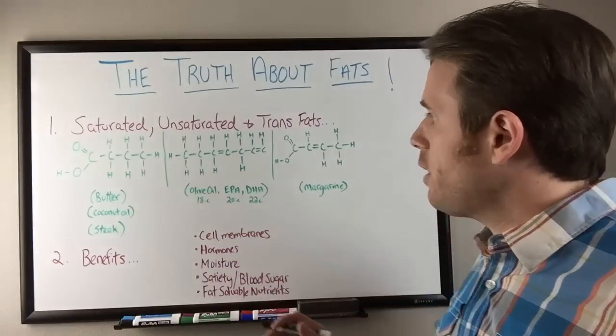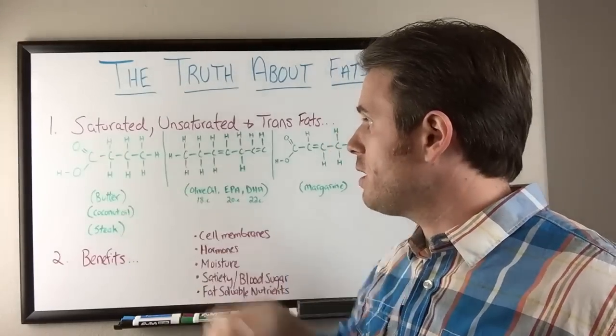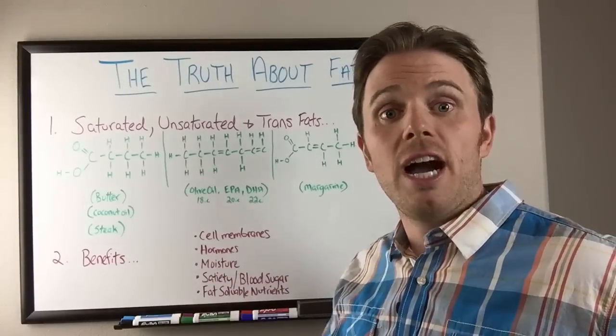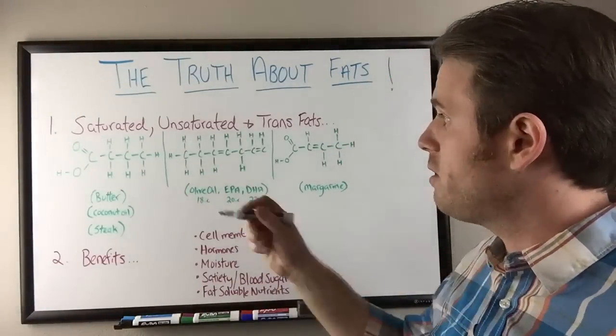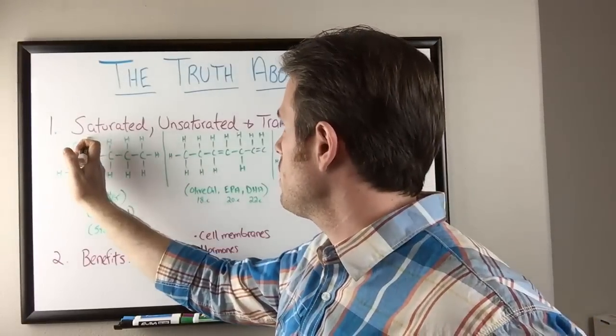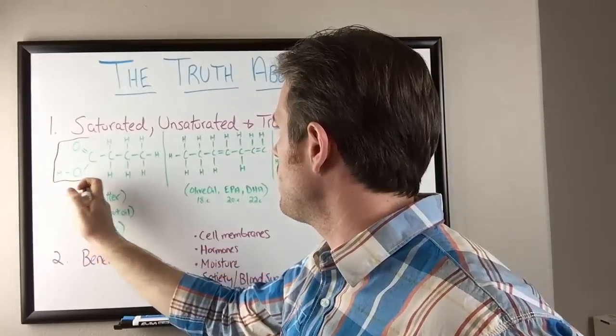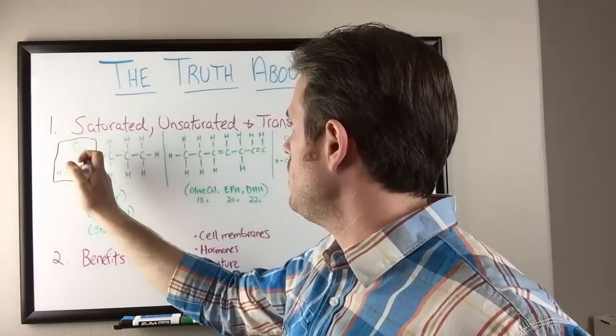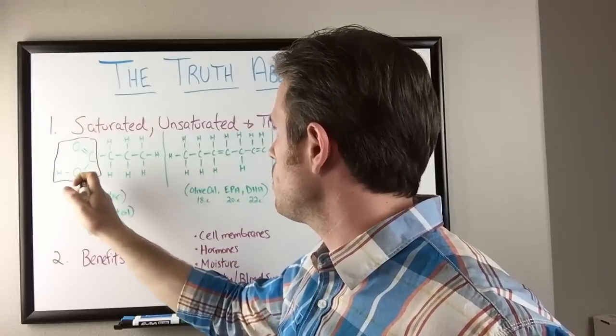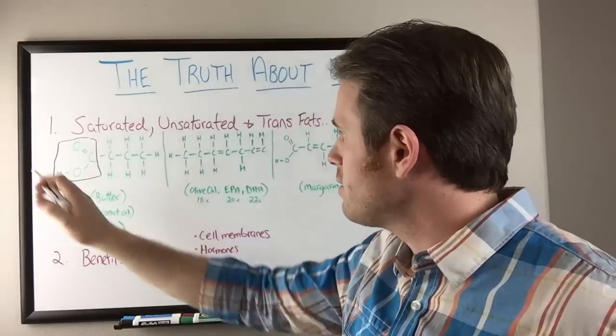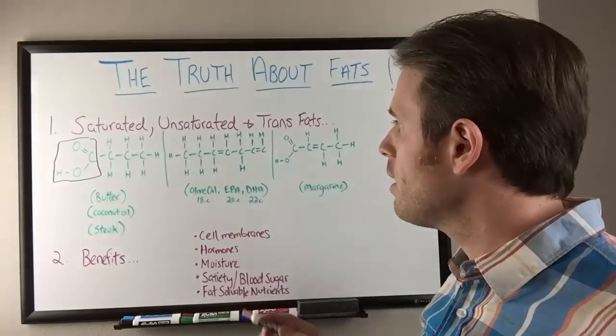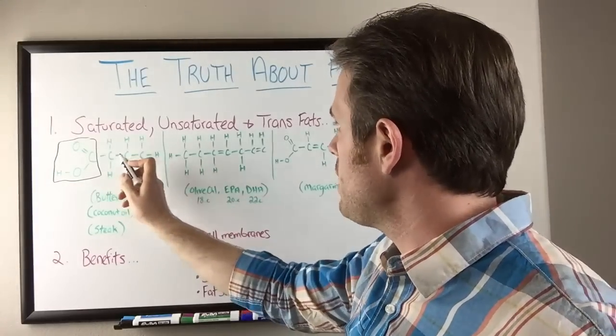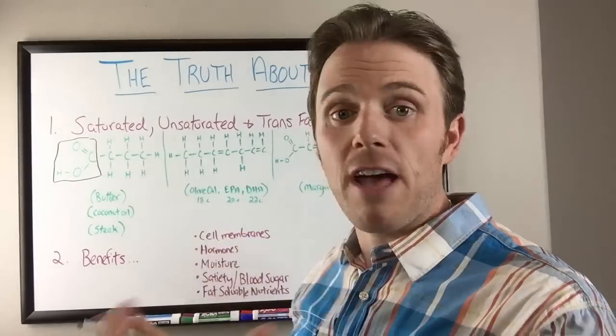So fats are nothing more than carbon molecules attached to various oxygen and hydrogen groups. So you can see here, this is the ending, this part right here, this is how all fats for the most part end. They all end in the C, double bond oxygen, single bond oxygen, hydrogen. That's how all essential fats end for the most part. And you can see here how many carbons are attached to that will make the fat what it is.